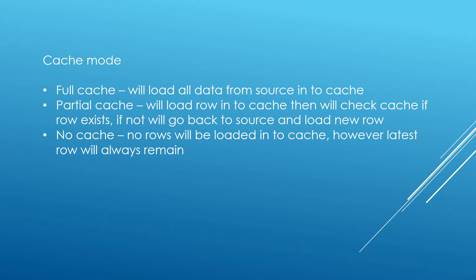Partial cache works row by row. It loads the first row into the cache, goes to the table, performs the lookup, then brings the next row in. On the next row it looks up the cache — if that row already exists it uses the cached value; if not, it goes back to the source, loads that value into cache, and performs the lookup. So full cache only hits the source once, whereas partial cache hits the source multiple times. With no cache, no rows are loaded into cache at all, but the latest row will remain in memory.